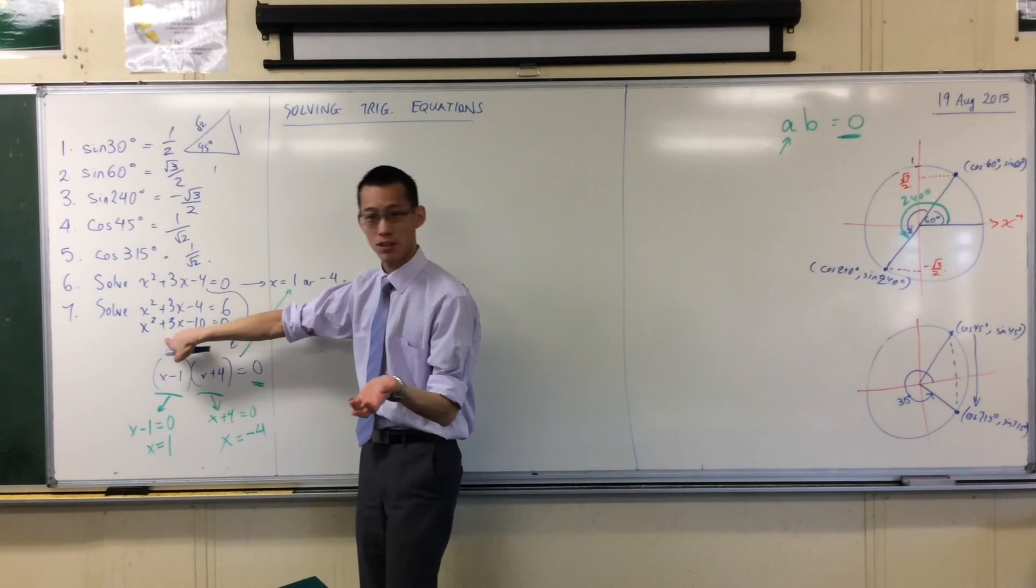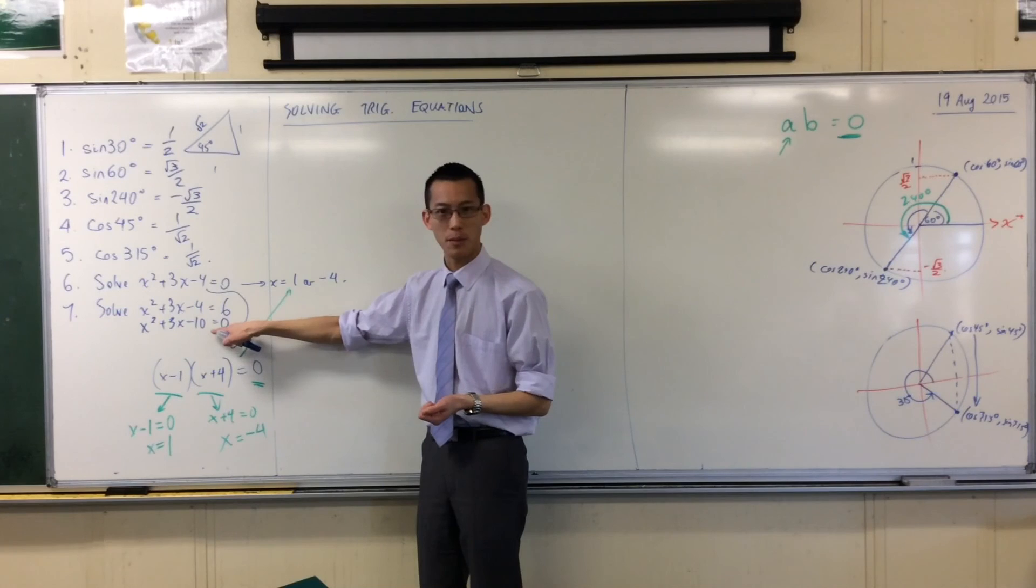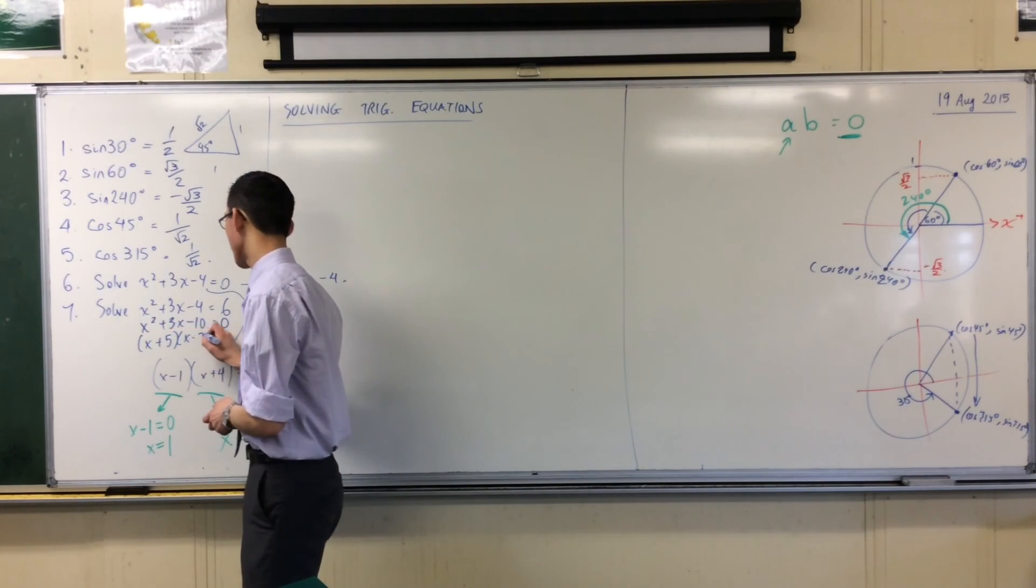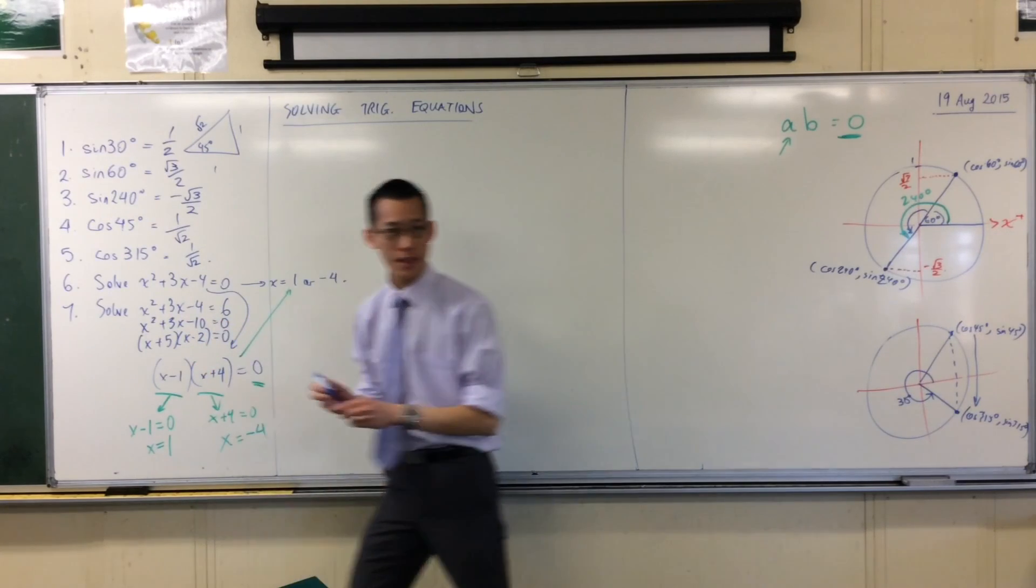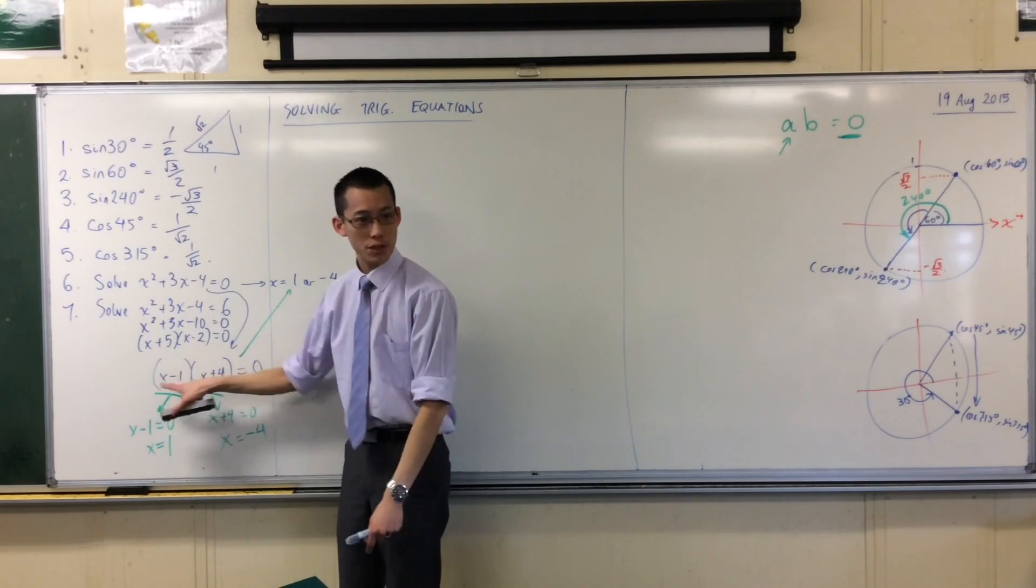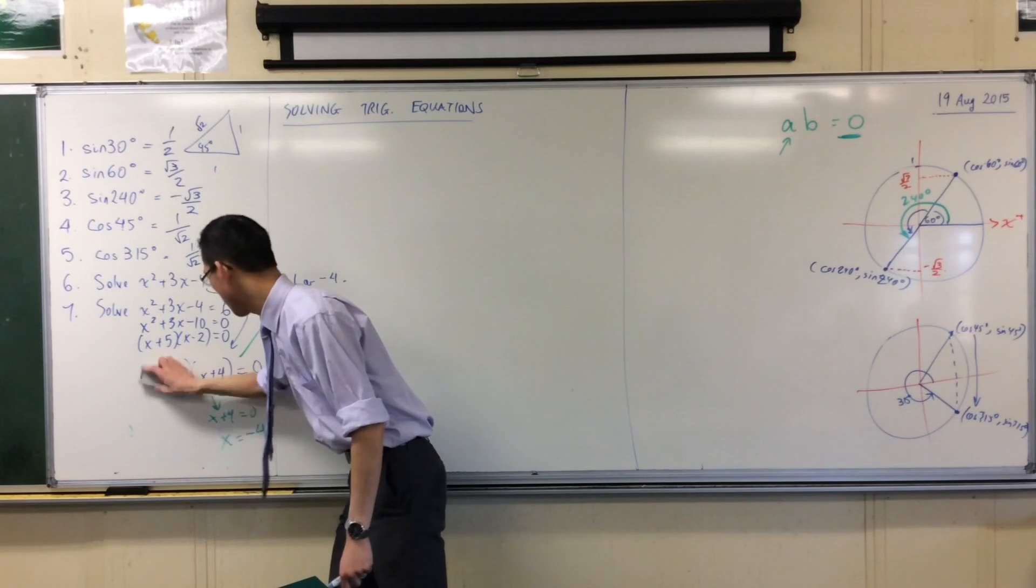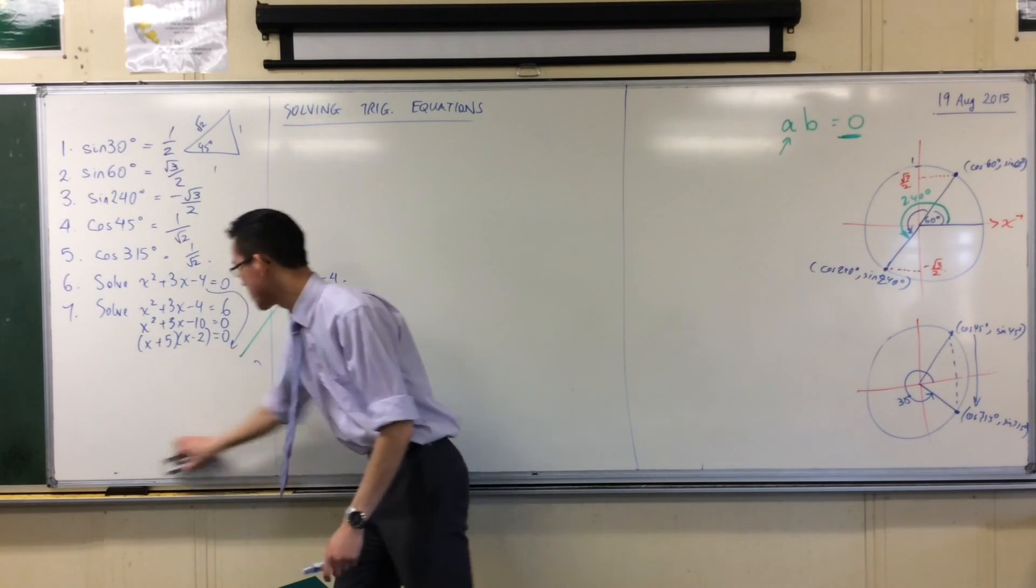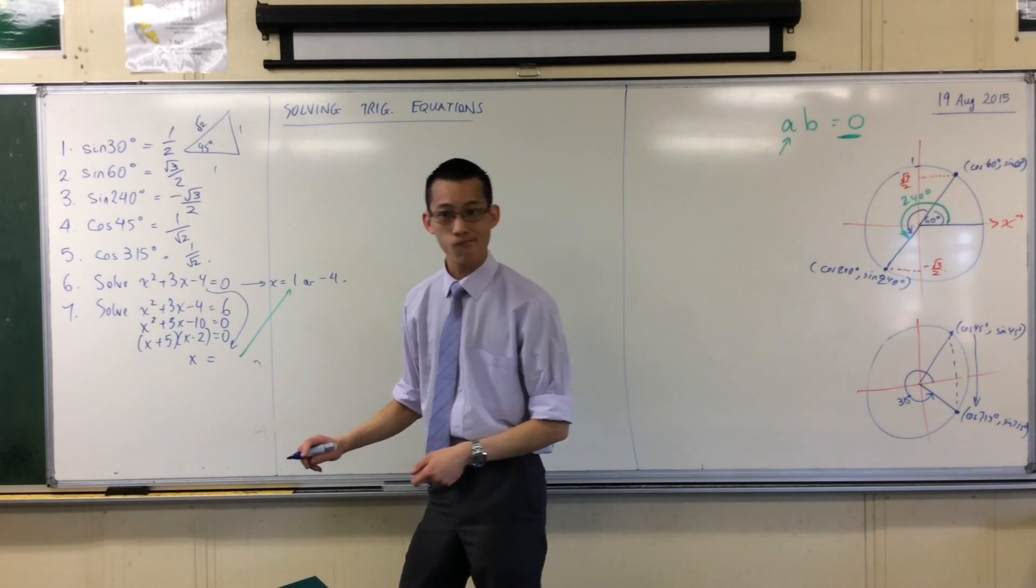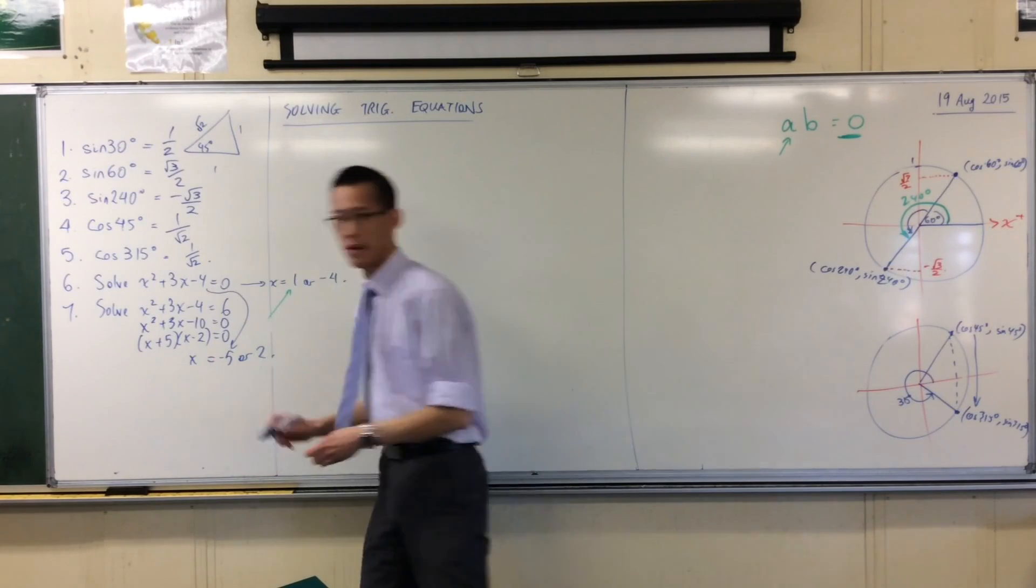And 5 times negative 2, that'll give me negative 10. So this will be my factorization. You okay with that? Just like I went from this factorization to the solutions, I'm going to do the same thing for this pair here, which will give me x equals, what are my two solutions? Minus 5, negative 5 or 2. Bam, I'm done.